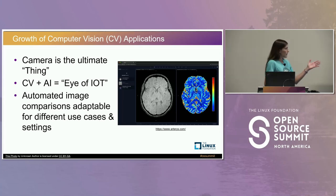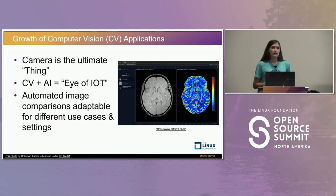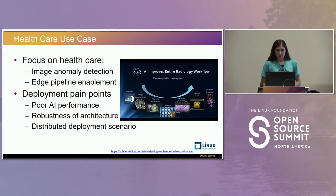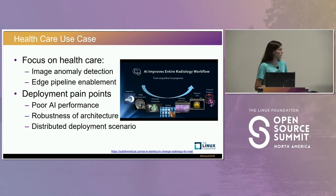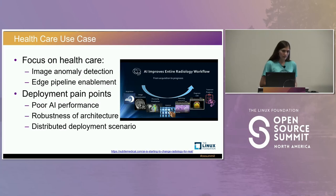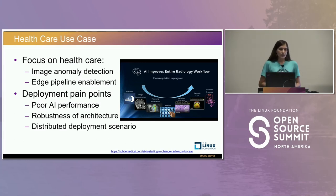You can think of it like a brain scan image where you have an input image on the left and you're doing some processing to get output results. We also considered a radiology workflow where a healthcare device gives some scan or image-based result, going through analysis down to a prognosis and potential treatment. We focused on image anomaly detection and edge pipeline enablement, with deployment pain points such as poor AI performance and a distributed deployment scenario.